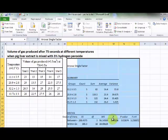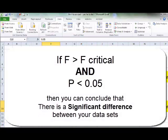We look at the temperatures. And if F is bigger than F critical, and if P is less than 0.05, there is a significant difference between our temperatures. This can be summarized here. If F is bigger and P is less than 0.05, there is a significant difference between your treatments, which in this case are the temperatures.